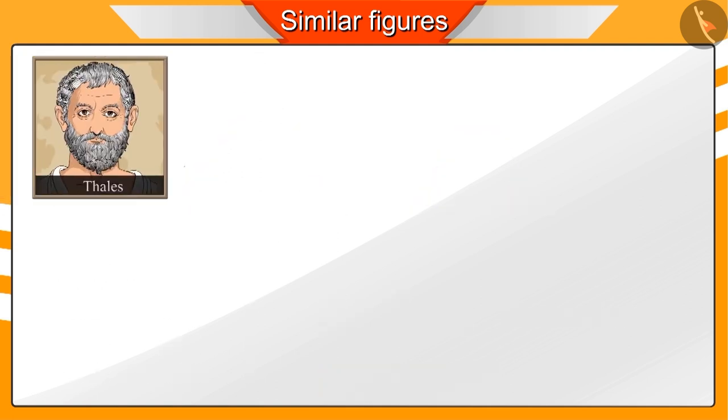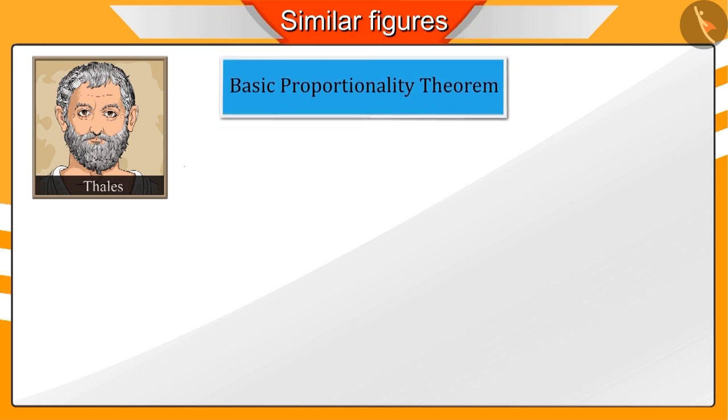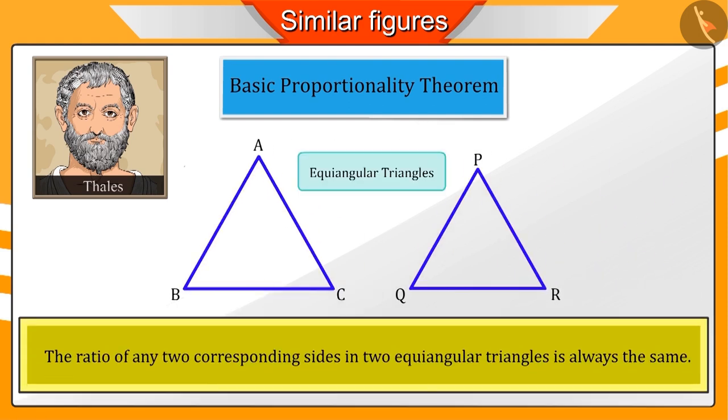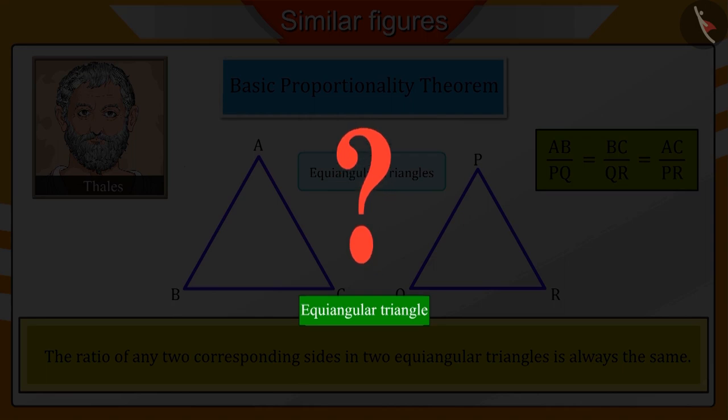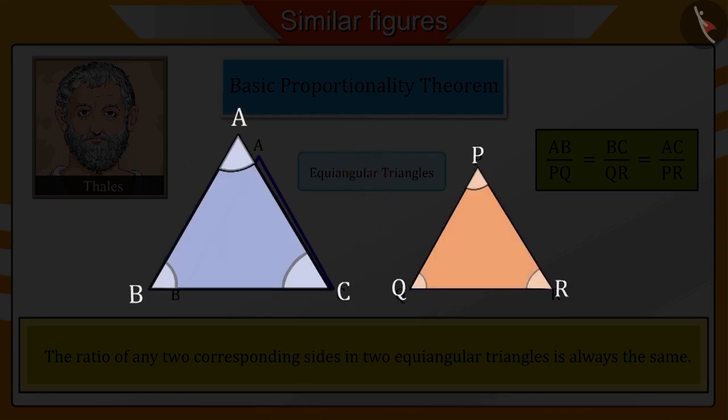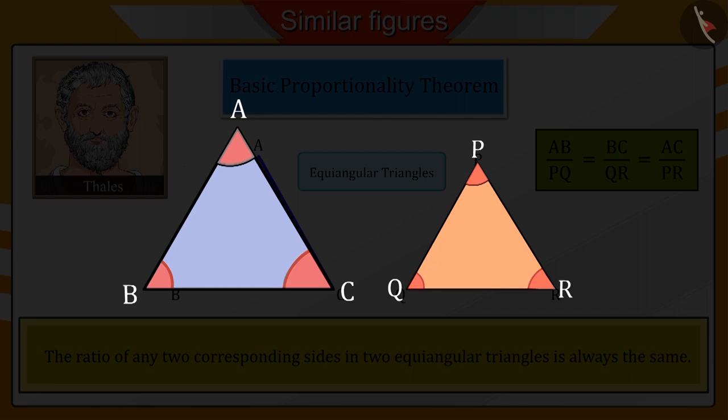Famous mathematician Thales has given a conclusion by using the basic proportionality theorem that the ratio of any two corresponding sides in two equiangular triangles is always the same. Can you tell what are equiangular triangles? Triangles which have equal corresponding angles are called equiangular triangles.